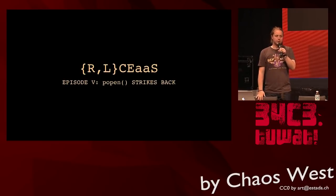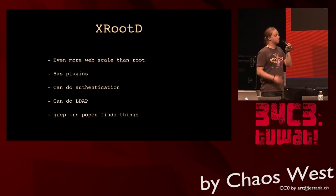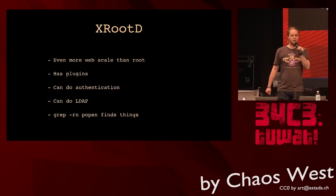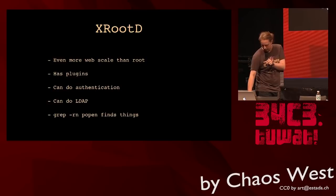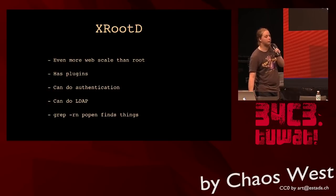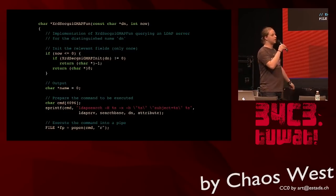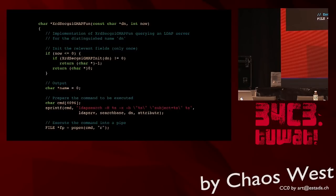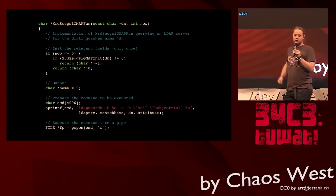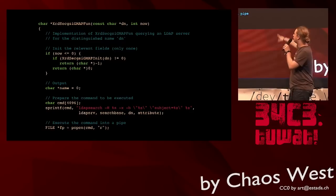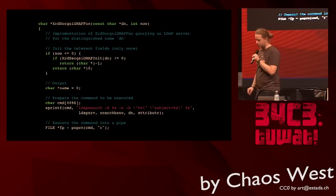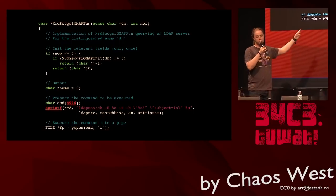They decided xrootd is cool, it's more web-scale, you can even authenticate with a lot of users. So they put this LDAP module in it, and they needed to map users to the LDAP principal distinguished names. Grabbing for popen finds things. Anyone see what's wrong here? It's the same thing as before, pretty much. This thing here is the username - the other bug you had to authenticate first and then put the filename, but here you can just put in a username containing quotes and a semicolon, and there you go - you have a shell.